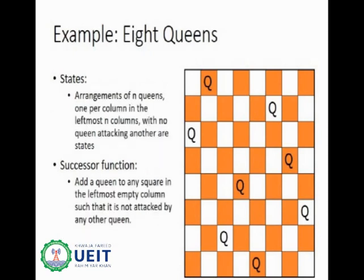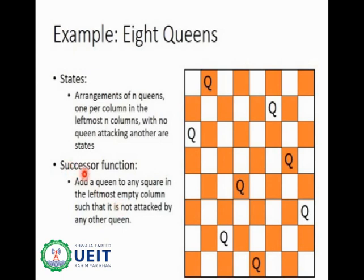States can be arrangements of n queens, one per column in the leftmost n columns, with no queen attacking another. The successor function adds a queen to any square in the leftmost empty column without conflict. These are the rules of the game. This ends lecture number eight.